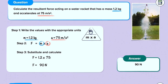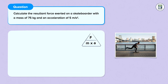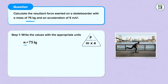Let's look at a second example. Calculate the resultant force exerted on a skateboarder with a mass of 75 kilograms and an acceleration of 5 meters per second squared. Step one: we write the values with the appropriate units. Mass is equal to 75 kilograms. The acceleration is equal to 5 meters per second squared.